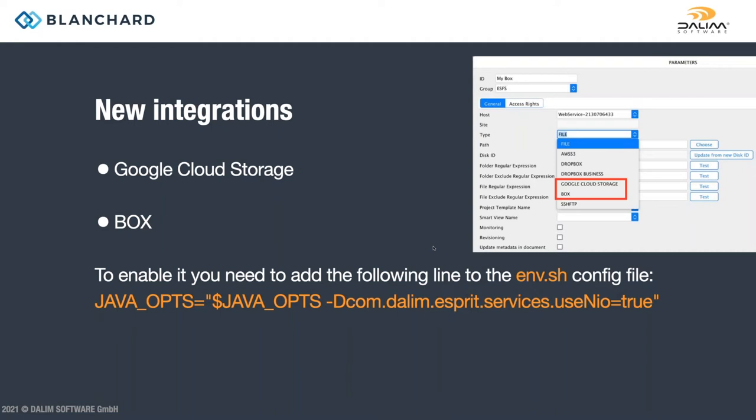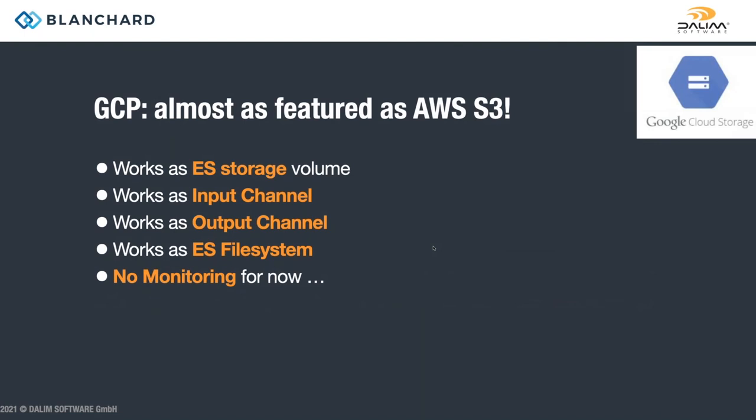One of the new features is Google Cloud Storage, to go along with AWS S3 and Dropbox. You do have to enable it using the Java ops option shown. You can email us and we can send you the information on that. You can use it as main storage, input channel, output channel, and ES file system, but there's no monitoring for right now. With S3, you do have monitoring available using SQS, but for Google there is none.